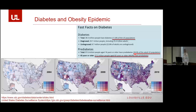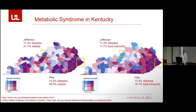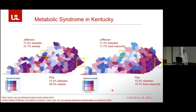If we look closer to home using that same dashboard, we can look at Kentucky statistics. I'll highlight Jefferson County and Pike County in the far east. Jefferson County has about 11% diabetes and about 30% obesity. Pike County is even higher — almost 40% obesity. I recommend people go to this website because you can graph it by food insecurity as well. Pike County has high rates of diabetes, high rates of obesity, and almost 20% food insecurity.